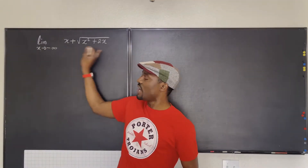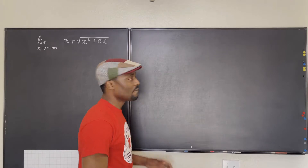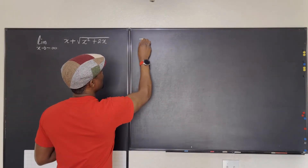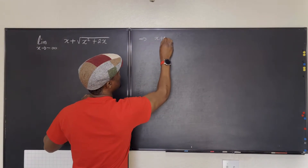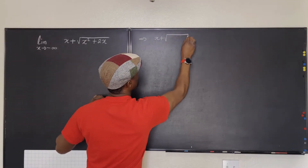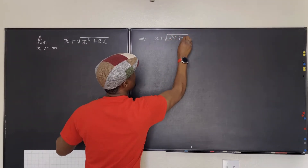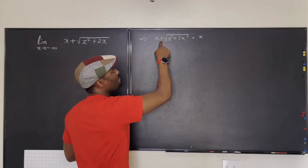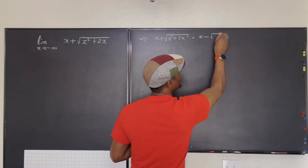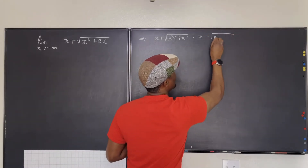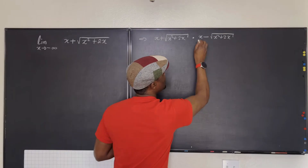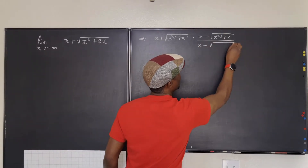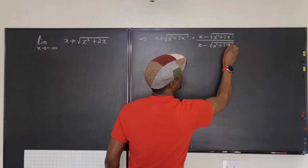How can we change this expression to make it usable? We're going to multiply x plus radical (x² + 2x) by its conjugate — x minus radical (x² + 2x) — and that's the only difference. We'll divide it by x minus radical (x² + 2x) as well.